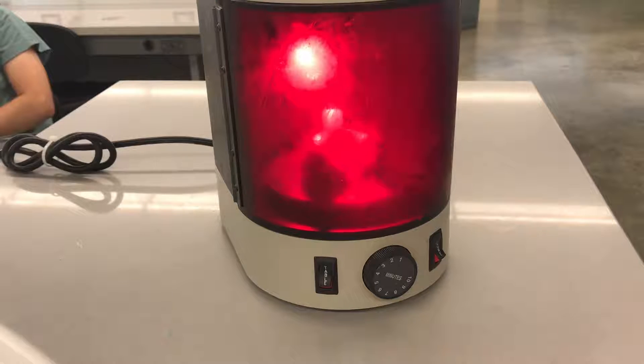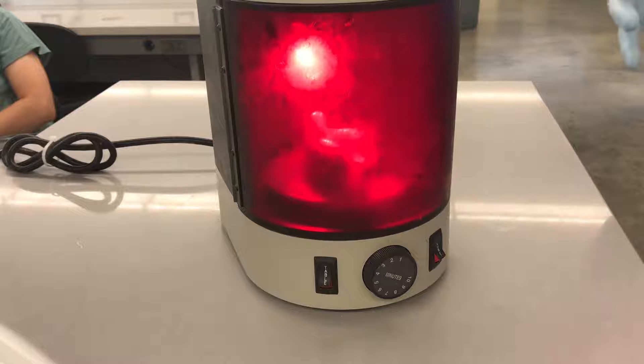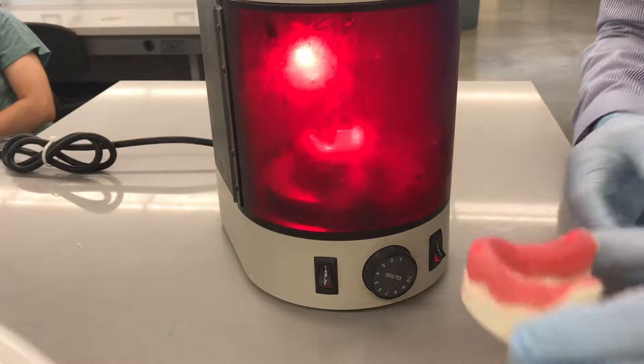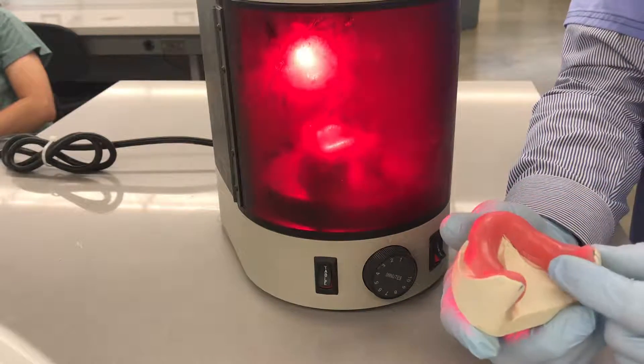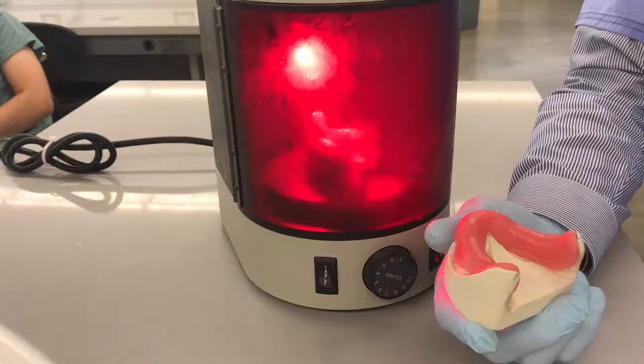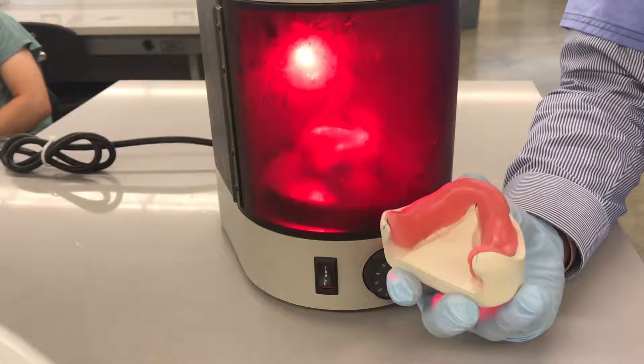In most cases, you're going to have some material that's still soft around the periphery of the tray, because some of the surfaces of the cast block the light source from penetrating it. Usually on the lower, inside the retromolar pad area. So maybe for the lower, you can go a little bit longer, you can go three minutes.